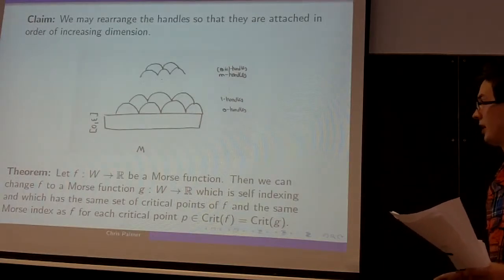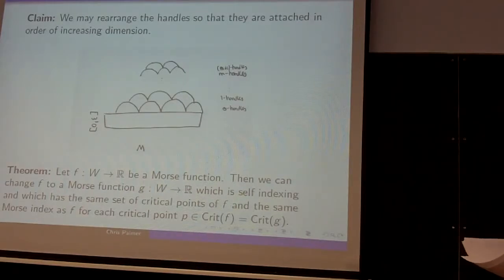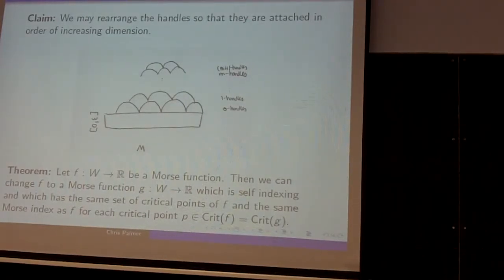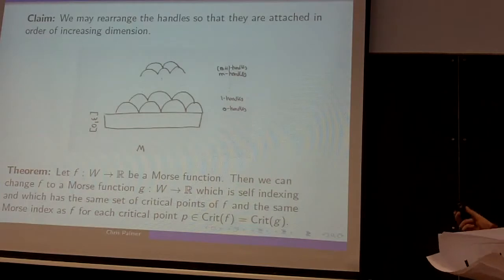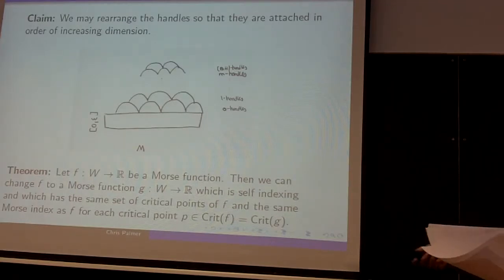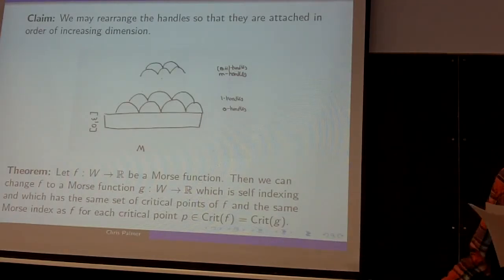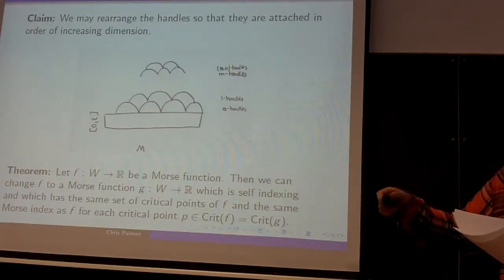It's a general theorem that if F is a Morse function on our manifold W, then we can change F to a new Morse function G which satisfies some nice properties. The set of critical points of G is the set of critical points of F, the Morse indices coincide, but crucially G is self-indexing, which means for a critical point P the value G(P) is in fact the index of G at P. And so we could use the ascending cobordism from this new Morse function to give a handle decomposition where the indices are increasing.